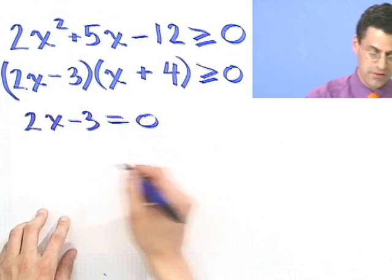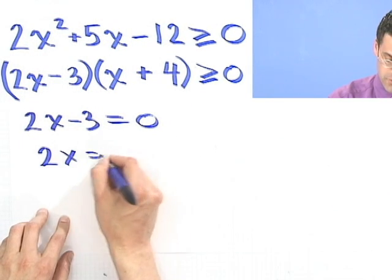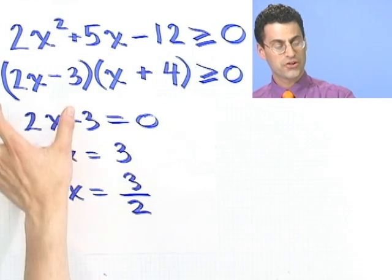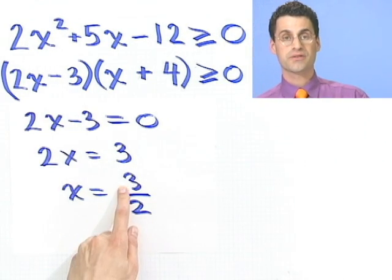So where does that equal 0? Well, 2x would equal 3, so x would equal 3 over 2. So this is going to be 0 at 3 over 2.